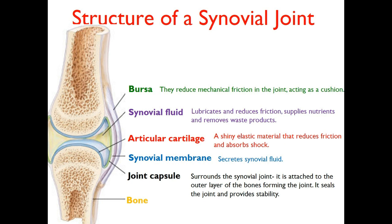The next part is synovial fluid. Think about a car — it has oil to lubricate and stop the engine from getting ground up. Similarly, synovial fluid lubricates and reduces friction, and also helps to supply nutrients and remove waste products. As you exercise, you actually create more synovial fluid, so the structure of the synovial joint improves through exercise. People who don't create enough synovial fluid can get really dry joints that start to rub together.